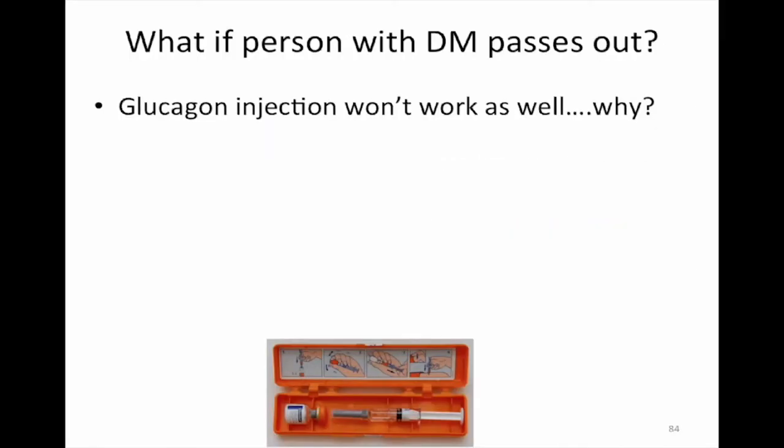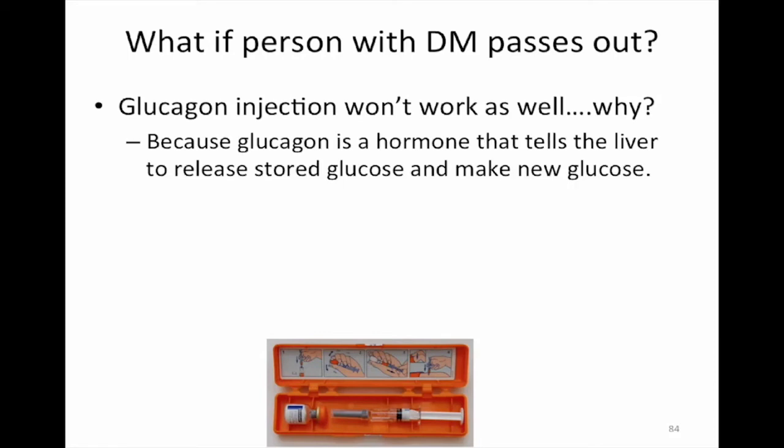So what about glucagon? Glucagon is a hormone. People that inject insulin should have a glucagon kit and when administered, somebody else would give it to them because they're passed out or having a seizure or something. When administered, the way that it works is the glucagon tells the liver to do gluconeogenesis, glycogenolysis. Because glucagon injection isn't going to work as well if the liver is busy with alcohol.